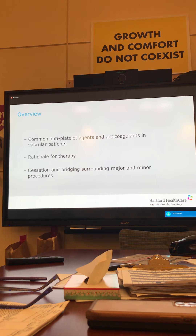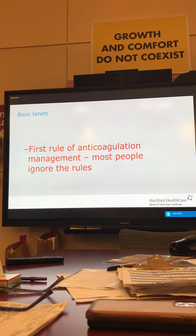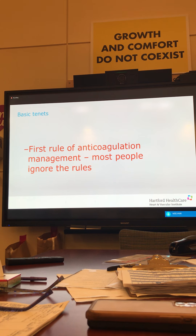I'm going to briefly go over common antiplatelet agents and anticoagulation, and then go over RASC therapy and stopping and bridging some of these before major and minor procedures. The first rule of anticoagulation management is that most of us ignore the rules. For instance, one of the things you may see us do all the time is put patients on 500 units an hour of heparin after a lower extremity bypass — there's no data to support that, but that's what we want to do. Another thing is putting patients on anticoagulation after a prosthetic bypass, where there's very limited data.